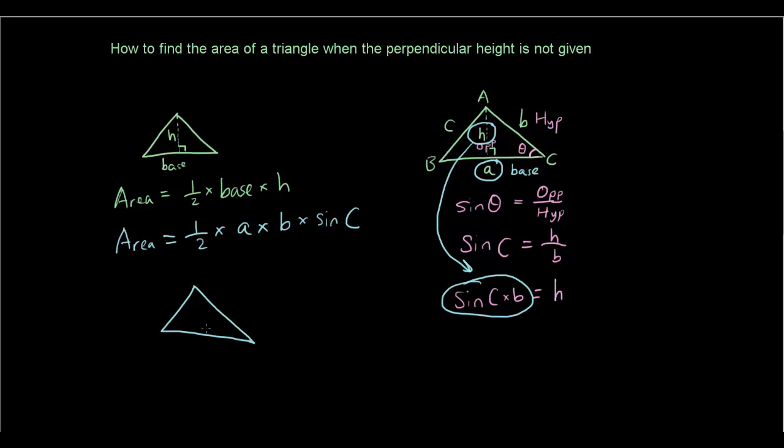you're going to need two sides. So for example, 10 centimeters and 15 centimeters. And you also need the angle in between. So let's say that's 30 degrees.